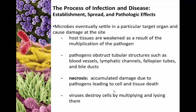Like we saw with some of the helminths, we can see pathogens obstruct tubular structures, creating things like masses of helminths or blood clots in particular areas. We can see necrosis, which is accumulated damage leading to tissue death. And then when we get to the viruses, we are actually going to talk about how viruses destroy cells outright.